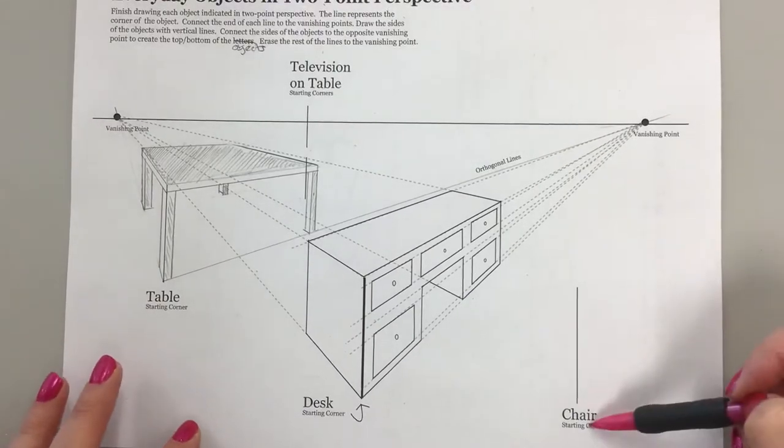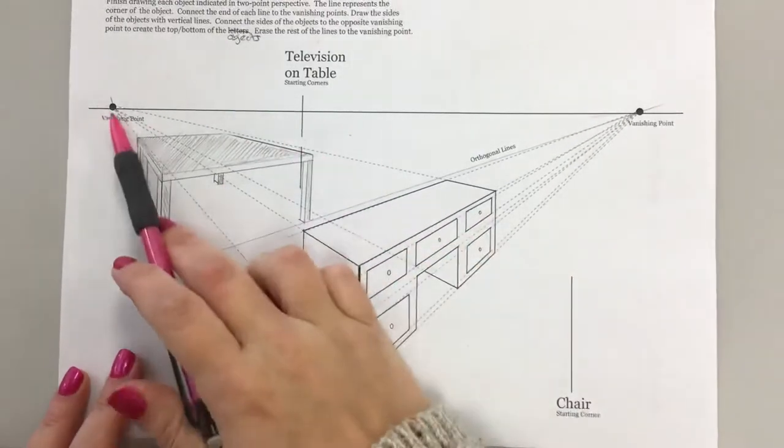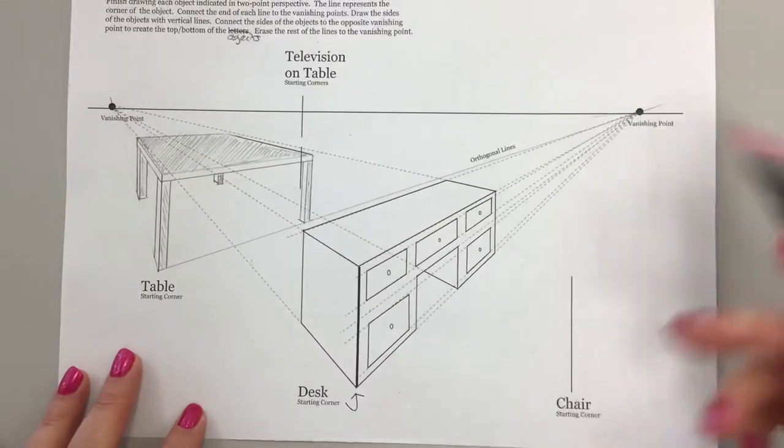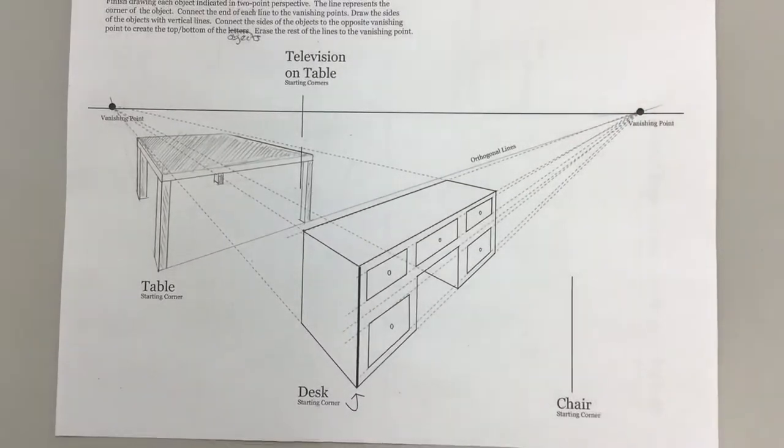For the next drawing, I'm going to jump over to the chair. I still have my left and my right vanishing points that I need for the chair, so I'm going to keep that in mind as I'm drawing.